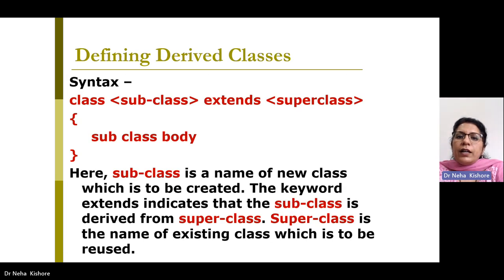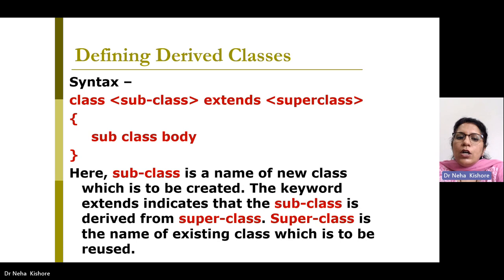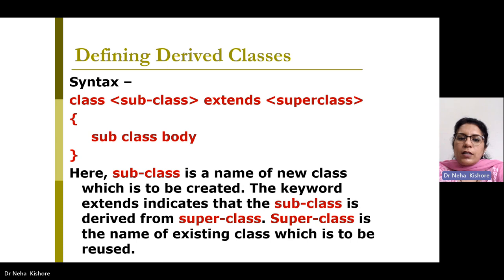How do we define a derived class? The syntax is: the 'class' keyword, then the name of the subclass, followed by the 'extends' keyword — which is the main keyword through which inheritance occurs — and then the name of the super class. So the syntax is: class SubclassName extends SuperclassName { body }. The two keywords used are 'class' and 'extends'.